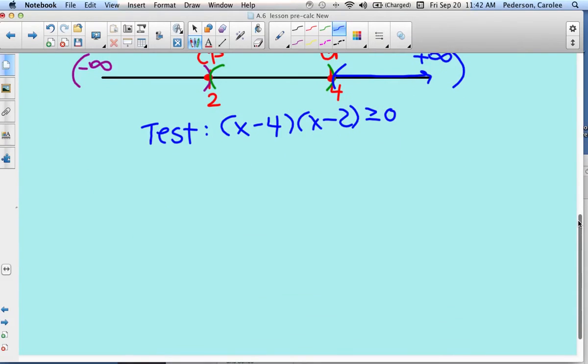So now I'm going to start with my first interval in the purple. Negative infinity to positive 2. Pick a number in that interval. So I'm going to just pick 0.